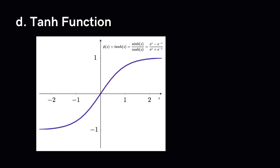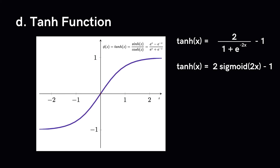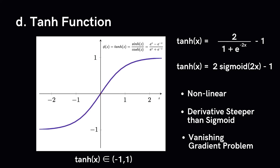Another activation function is the tanh function, which is mathematically a shifted sigmoid. Like sigmoid, it is non-linear so we can stack layers, and it is bounded from −1 to 1. The derivative of tanh is steeper than sigmoid, so choosing between sigmoid and tanh depends on your requirement for gradient strength. Like sigmoid, tanh also has a vanishing gradient problem.